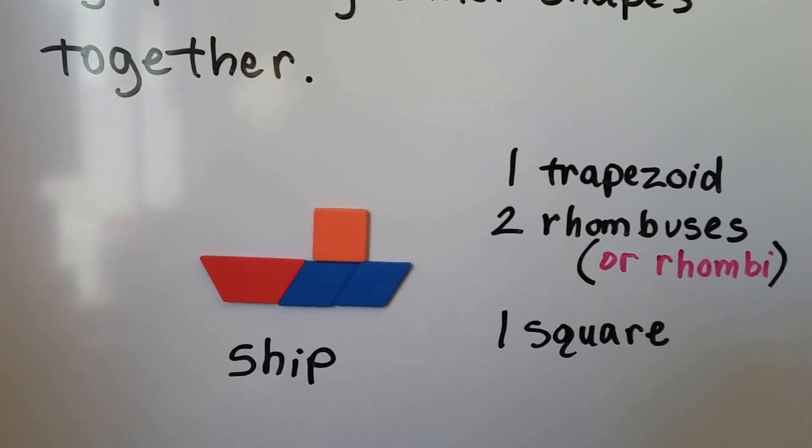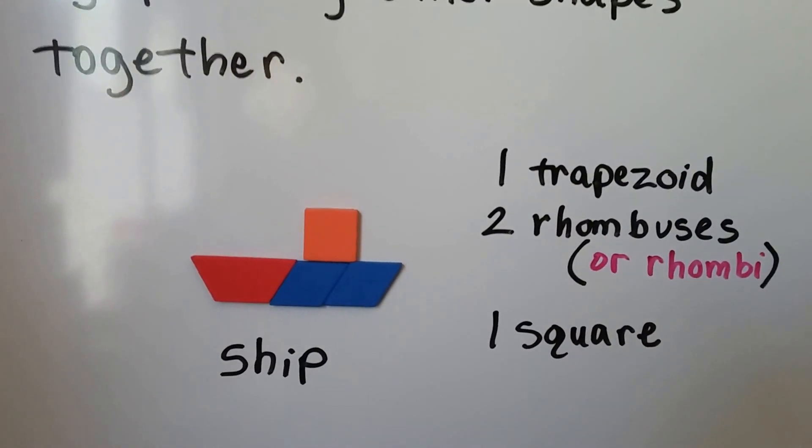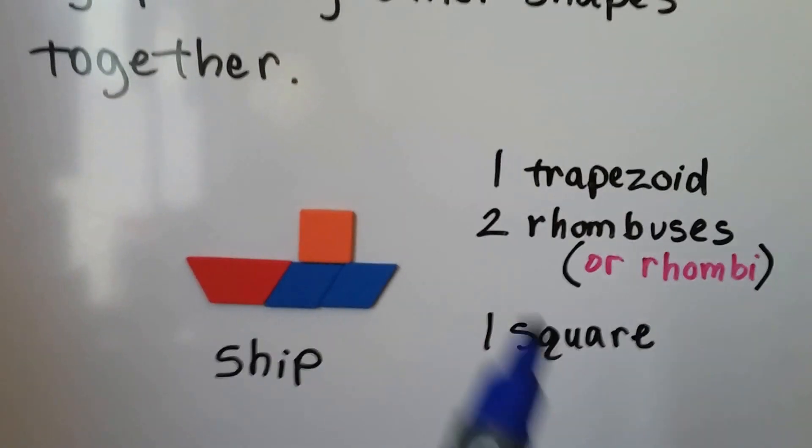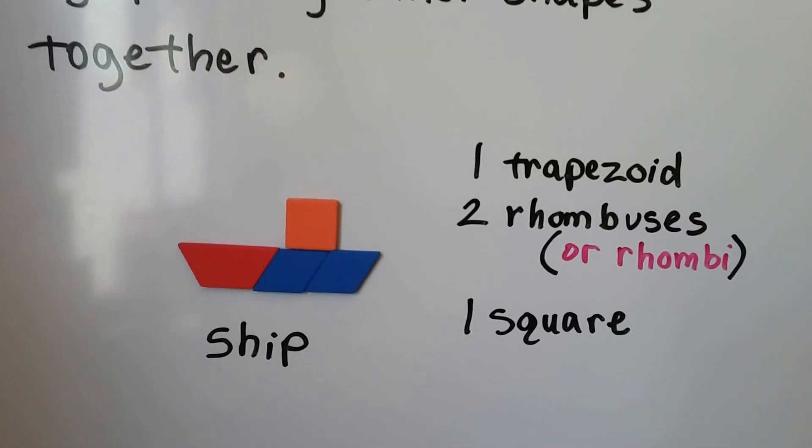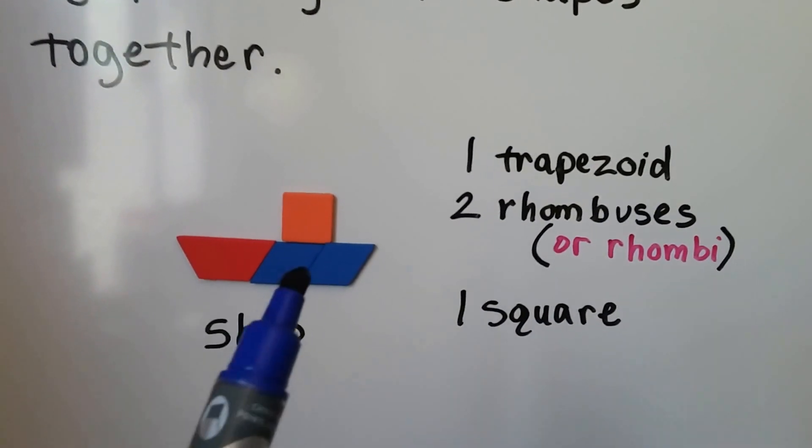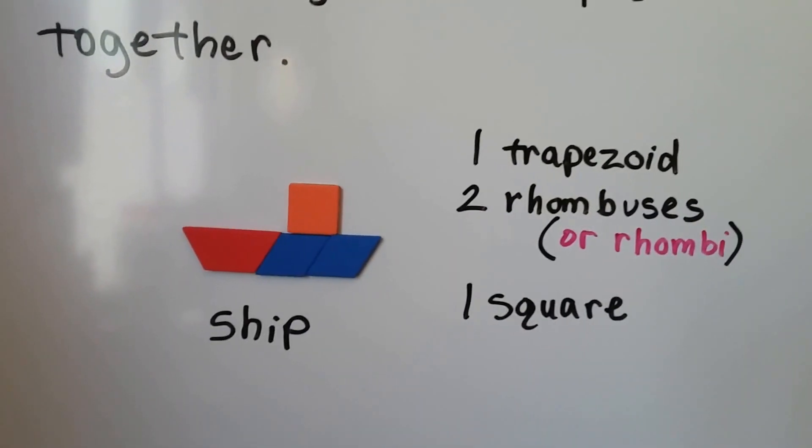I put one trapezoid, two rhombuses, or we could say rhombi. Either way is okay as a plural for rhombus. So I have one trapezoid right here, two rhombuses, and a square, and I made a ship.